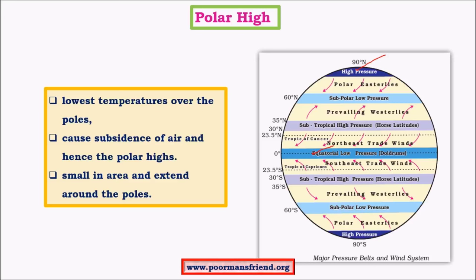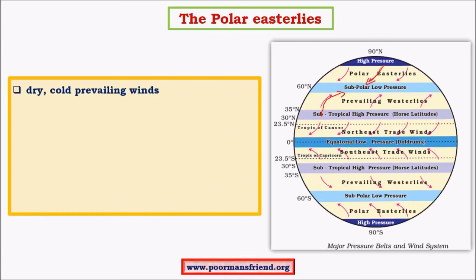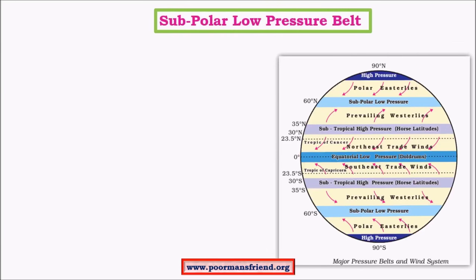Polar highs are very small in extent compared to other belts because of less landmass available. The winds blowing from polar high pressure zones towards subpolar low pressure zones are called polar easterlies — they blow from east to west. Winds also blow from subtropical high pressure zones towards subpolar low pressure belts as westerlies. These polar easterlies are dry because they are subsiding winds blowing from high pressure areas at the poles.